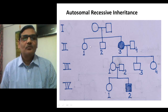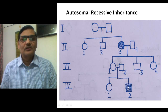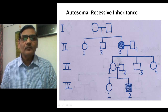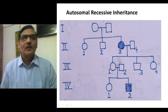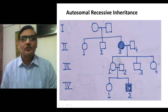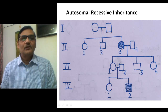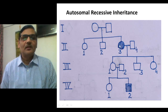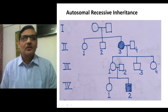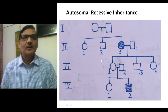Another important point is that autosomal recessive diseases are not expressed very frequently in a family — they are rare in occurrence, sometimes very rare — because they are expressed only when individuals are homozygous. Otherwise, they are carried in the family in recessive form and, being recessive, are hidden. This is the inheritance pattern.